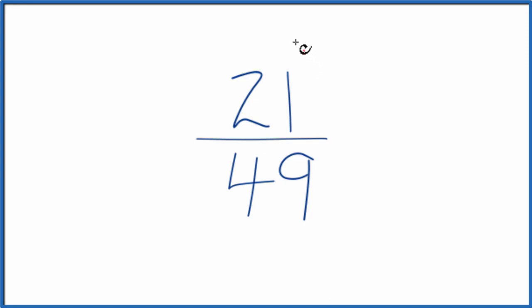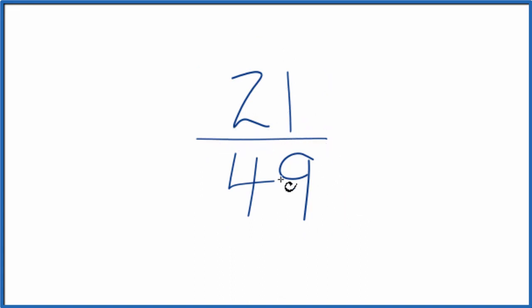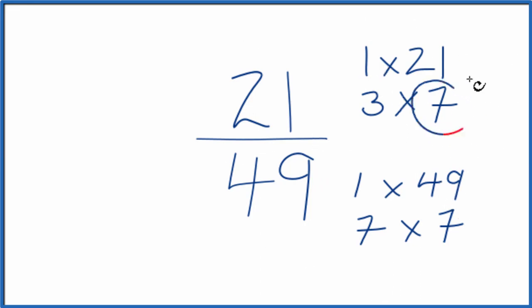To do that, we need to find a common factor, something that goes into 21 and 49 evenly. These are the factors for 21 and 49. So when we look for the greatest common factor for 21 and 49, it looks like 7. That's the greatest common factor.